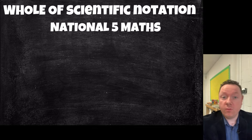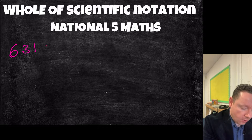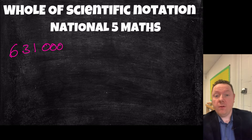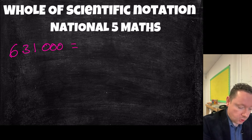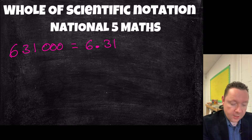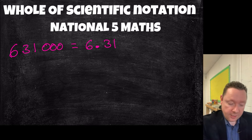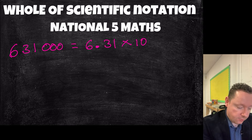Let's give you a quick example with a big number and a small number. If I take a big number like 631,000, I can write that in a different way. You take your first number, 6, put a point straight away, then 3, 1 — so 6.31. That number, the first number, always has to be between 1 and 10. So it's then times 10 to the power of — and to get your power, count the numbers after the 6: 1, 2, 3, 4, 5 — so it's to the power of 5.